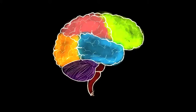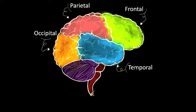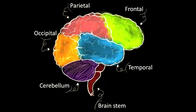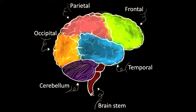This diagram here shows you the brain. It consists of four lobes: the frontal, parietal, temporal and occipital lobe, the cerebellum and the brain stem. The effects of an inflicted traumatic injury to the brain will vary depending on the part of the brain damaged.